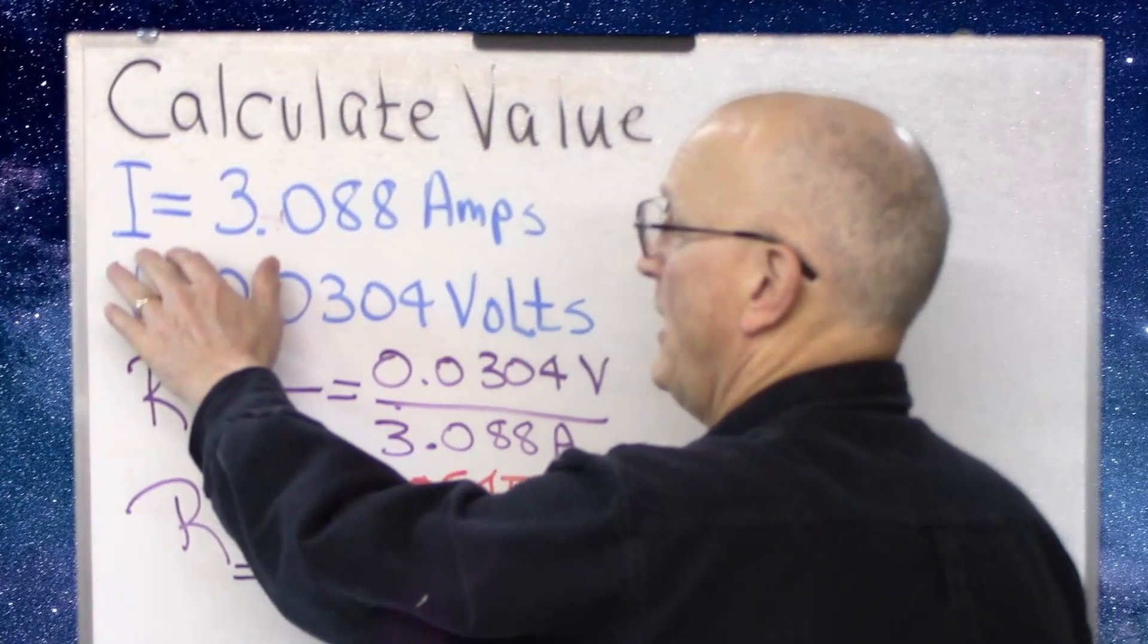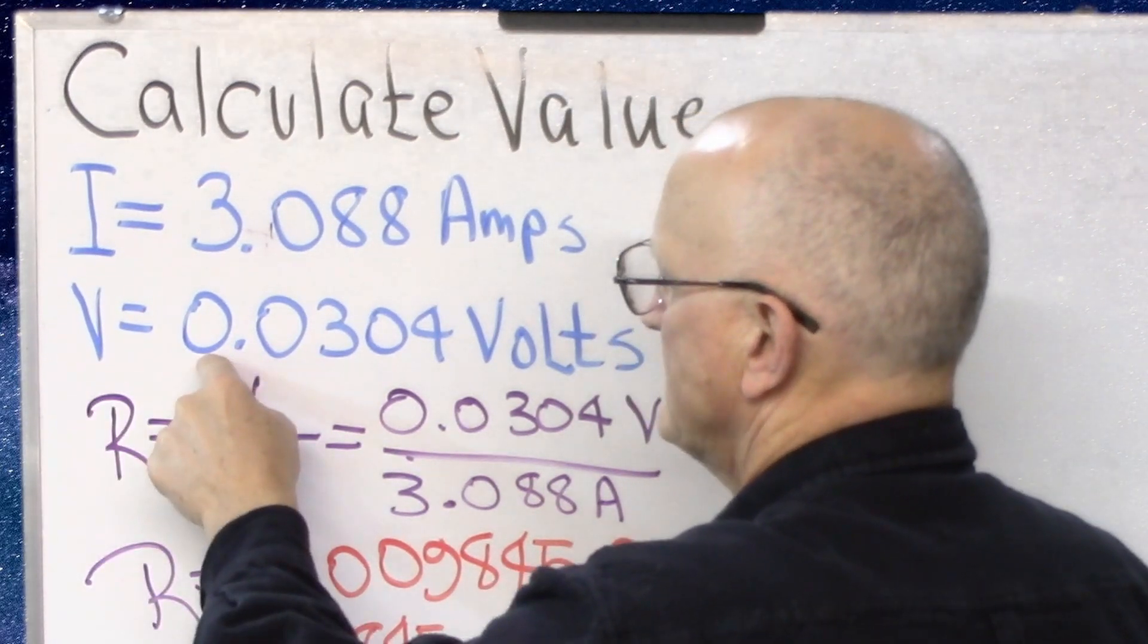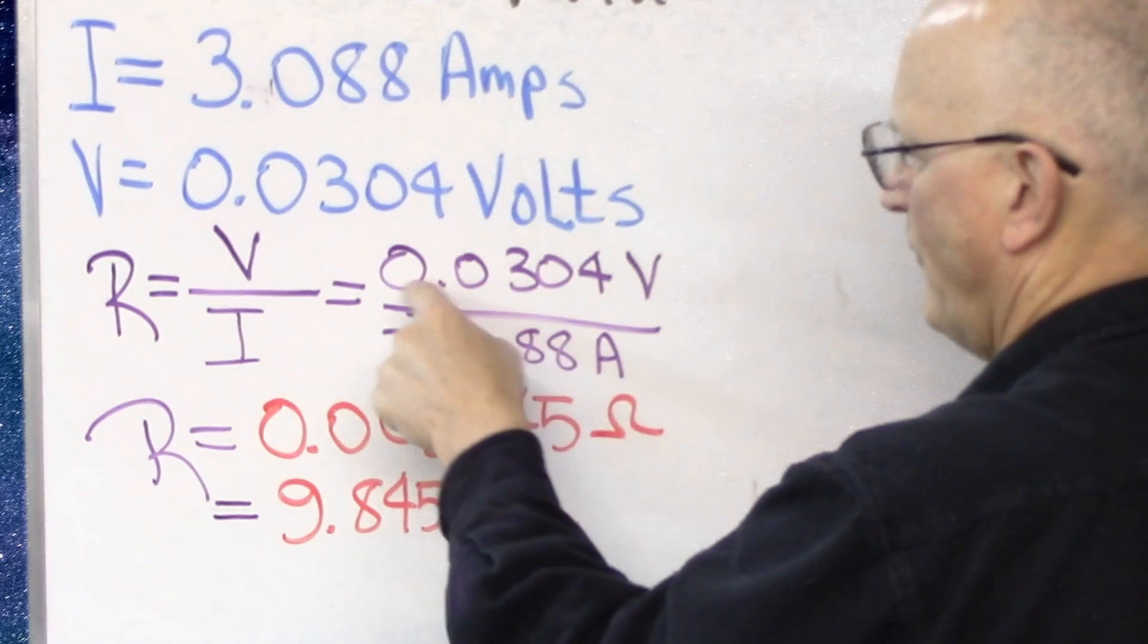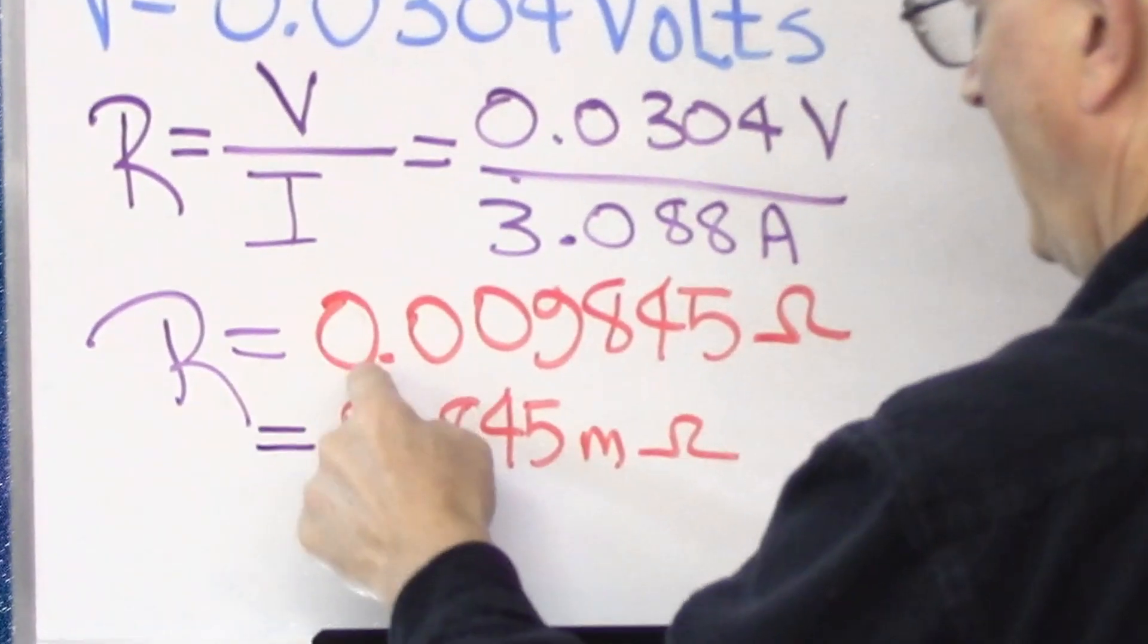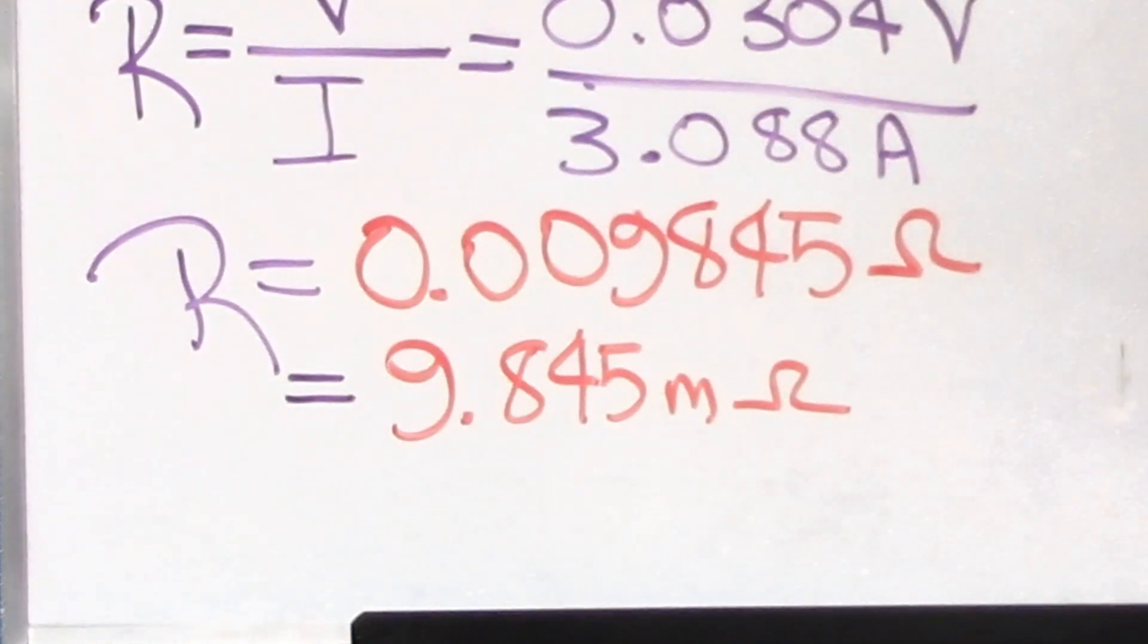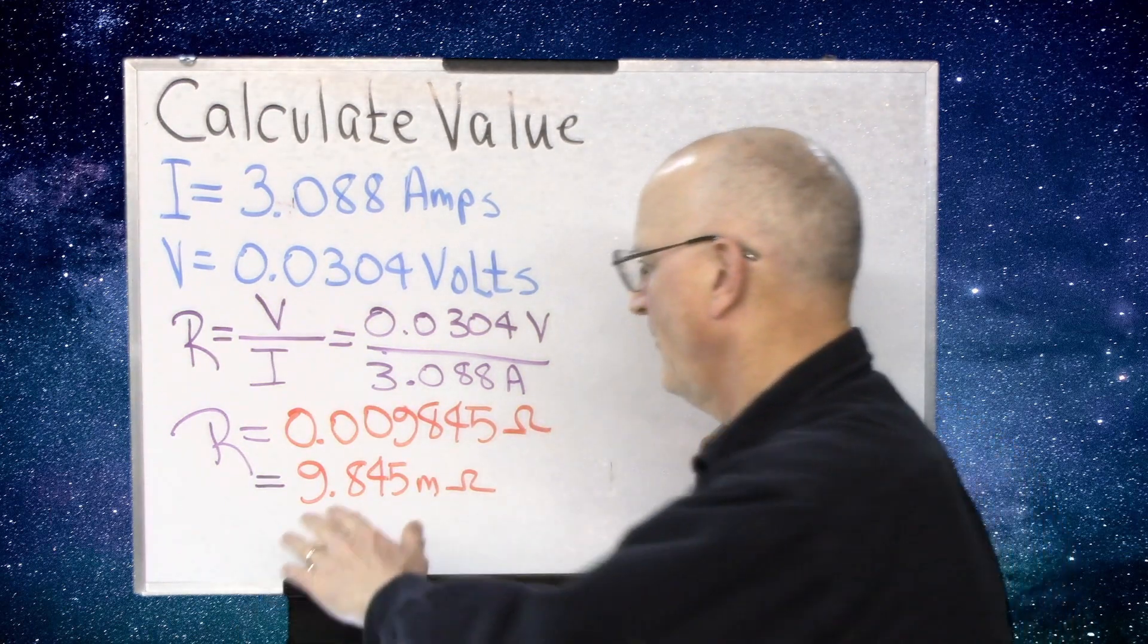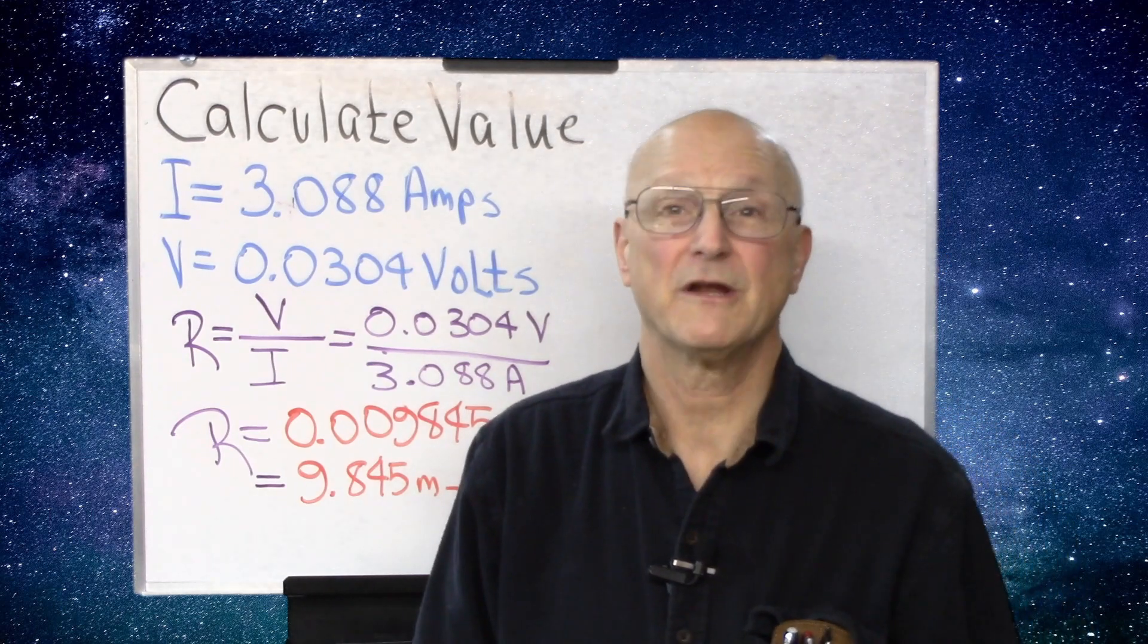We've completed our measurement on the bench. We've got our values. We discovered the current was 3.088 amps. And we had a voltage drop across our resistor of 0.0304 volts, or 30.4 millivolts. We know that resistance is equal to voltage divided by current. So we take our voltage 0.0304 volts. We divide it by our current, 3.088 amps. And we get 0.009845 ohms, or 9.845 milliohms. And this is a 10 milliohm resistor. So that is pretty doggone good. But remember, we're still only an accuracy of 2.32 percent. So we could be somewhere around this value because our measurement instruments limit our accuracy to plus or minus 2.32 percent.